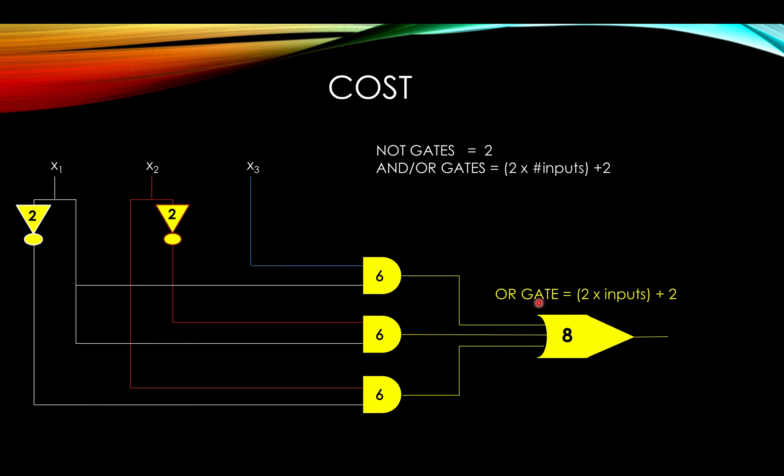Then we know that OR gates also cost us 2 times the number of inputs plus 2. In this case, we have three inputs, so 2 times 3 plus 2 equals 8. So we just add up all of our costs for each gate, which leaves us with it costing us 30.